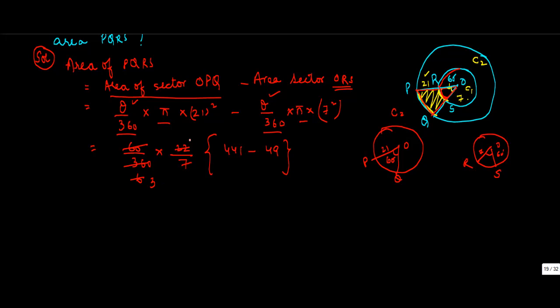This cancels with this. If you divide both by 2, this is 3, this is 11. So you get 11 over 21 times, now 441 minus 49 will give you 392.